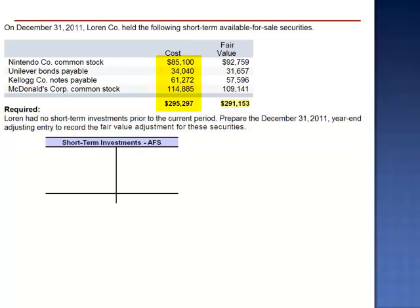The short-term investments available-for-sale account was debited for $85,100, $34,040, $61,272, and $114,885, giving a total debit balance of $295,297.